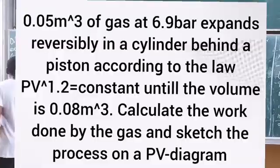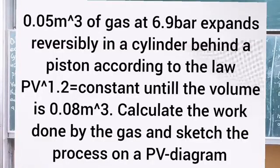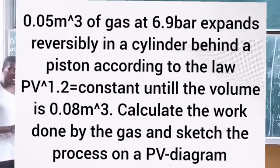0.05 m³ of gas at 6.9 bar expands reversibly in a cylinder behind a piston, according to the law PV raised to the power 1.2 equals constant. At the end, the volume is 0.08 m³. Calculate the work done by the gas and sketch the process on a PV diagram.